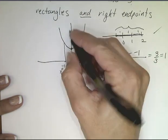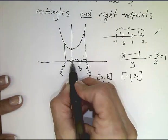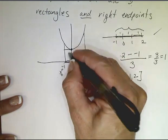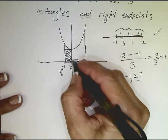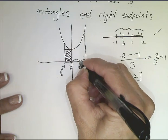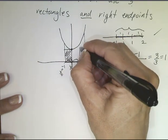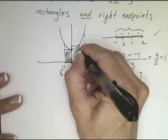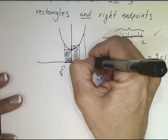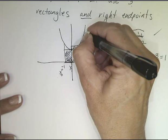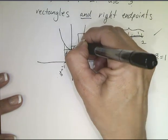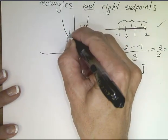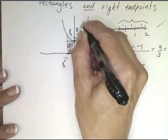The height of the first rectangle is determined by the right endpoint, so x₁. I go up to the height of x₁ and draw that rectangle, shading it in. My next rectangle goes from x₁ to x₂, and I determine the height by its right endpoint, so I go as high as x₂ allows and shade that region. The last rectangle goes from x₂ to x₃, and the height is determined by f(x₃), the value of the function at x₃. We'll call the areas R₁, R₂, and R₃.